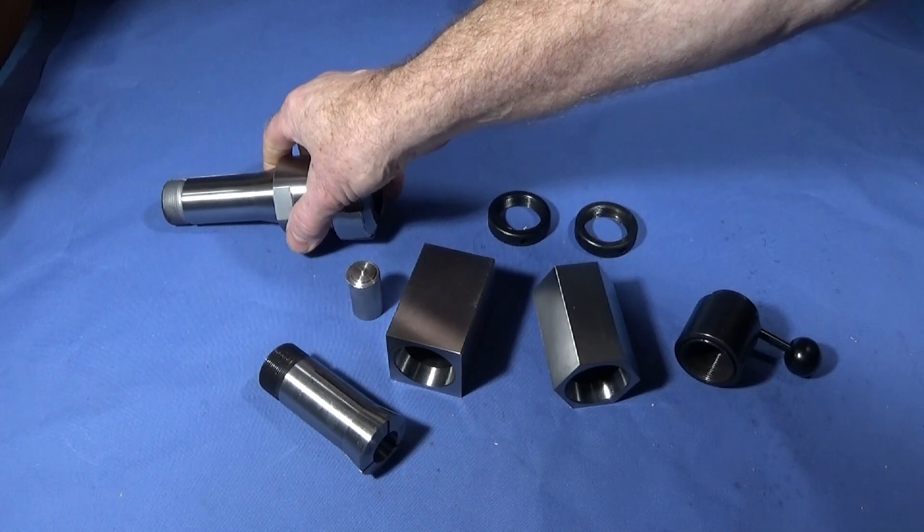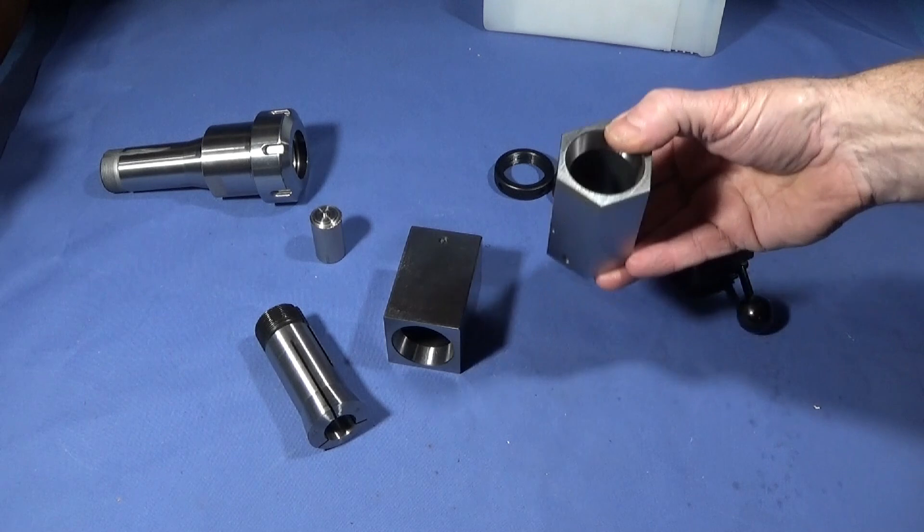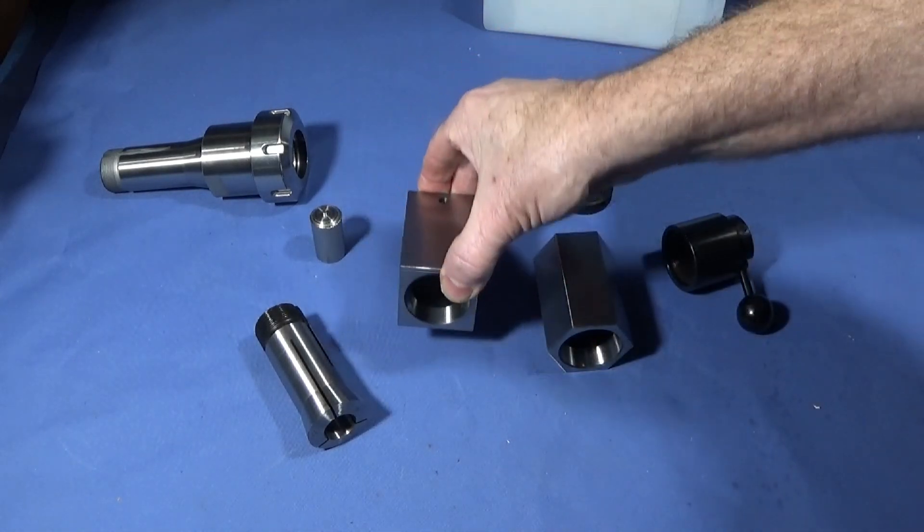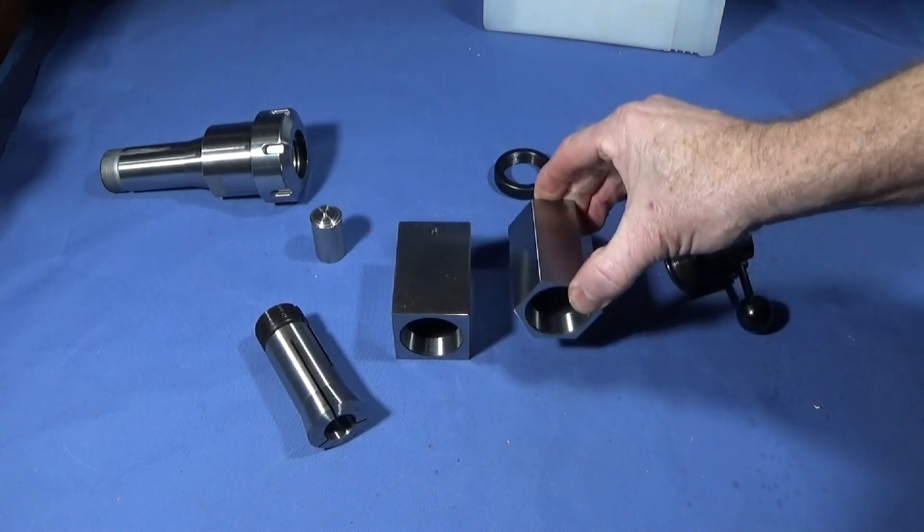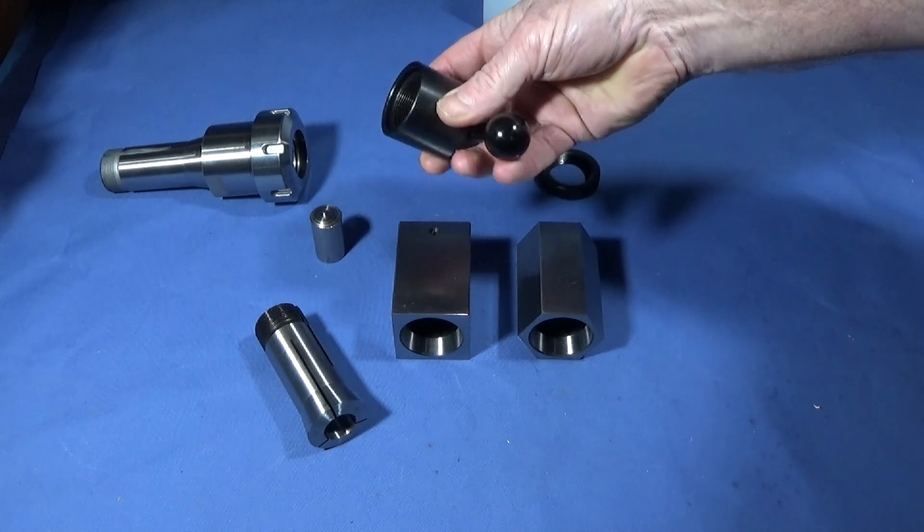Next I have these excellent 5C fixture blocks. It comes in a square housing and a hexagon housing, in the box with two collars and a cam mechanism to go on the back. It's a very simple and effective fixture.